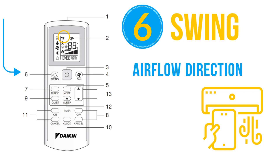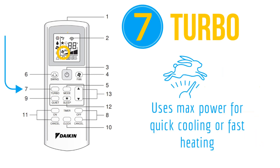Use the turbo function for fast heating or cooling — it is very useful when you enter the room during hot weather and want quick cooling. To activate turbo mode, press the turbo button. Turbo mode can be used in heat and cool mode only. Fan speed will be at maximum, and if you change the fan speed, turbo will be deactivated.